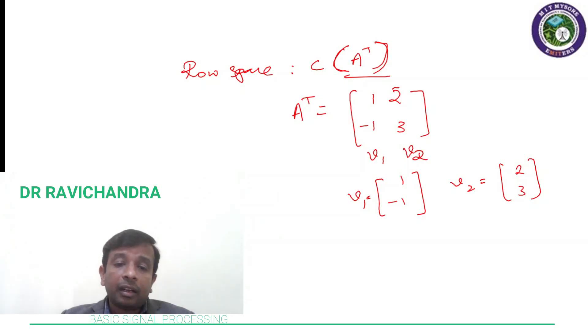And left null space, left null space is again, it is null vector or null space of, it is null space of A transpose, which is again similar to what I did here.